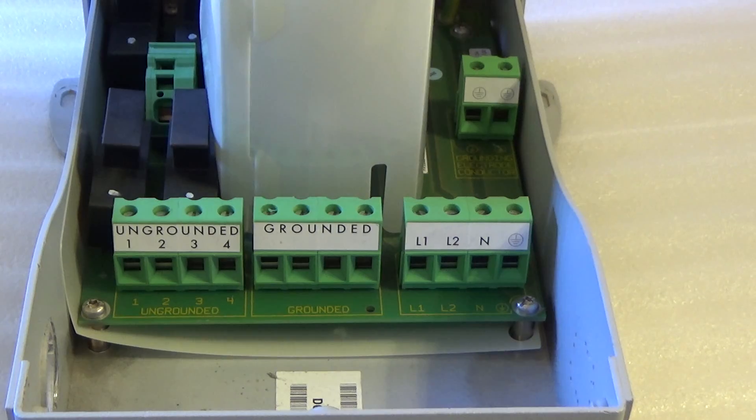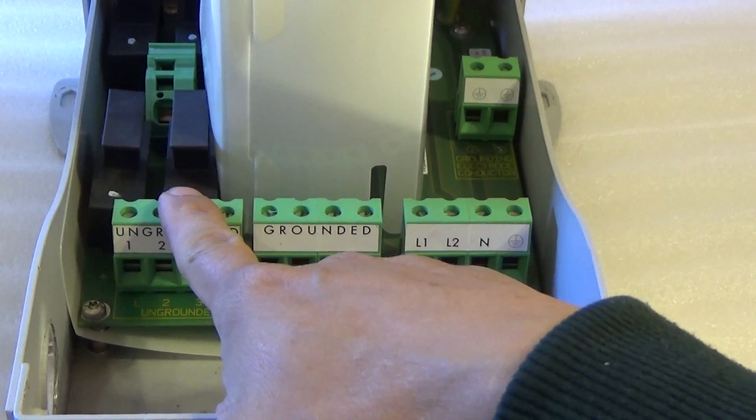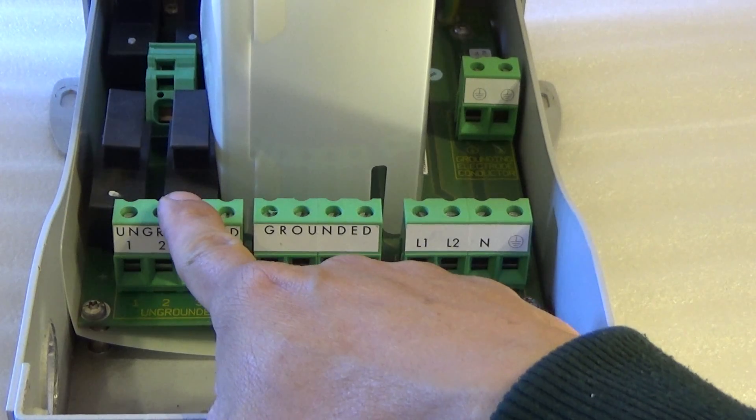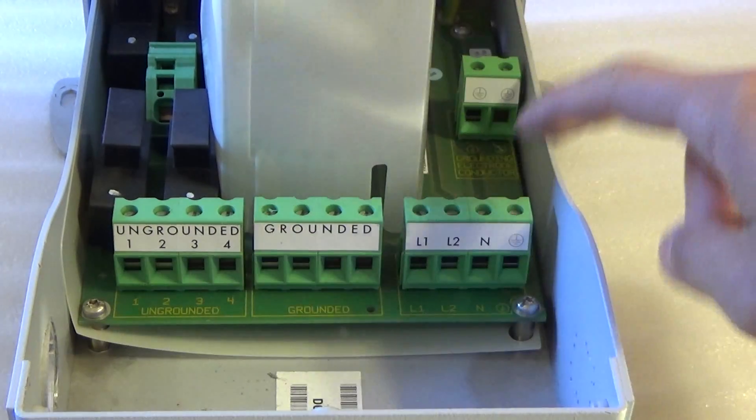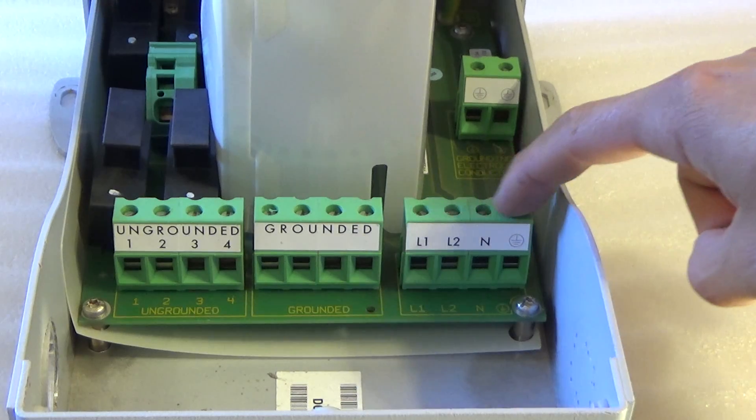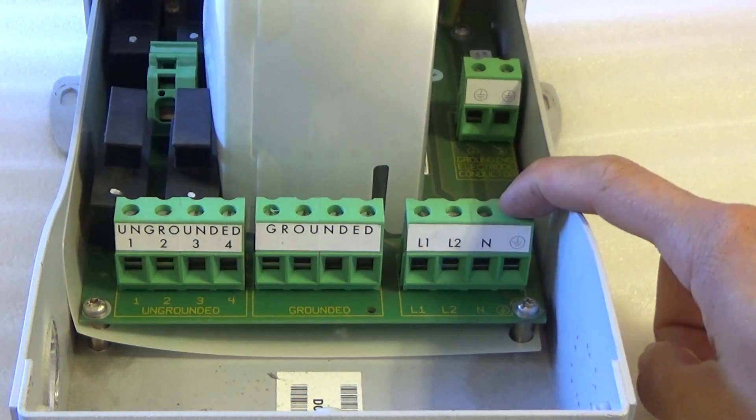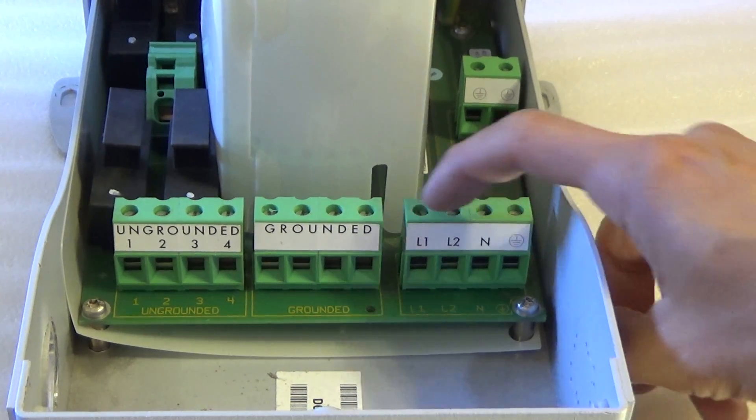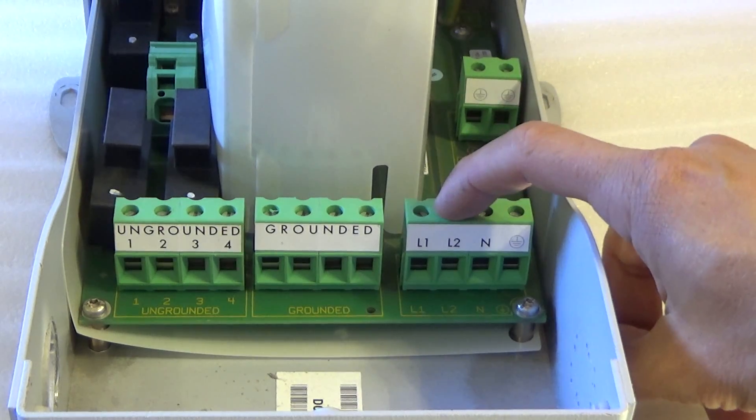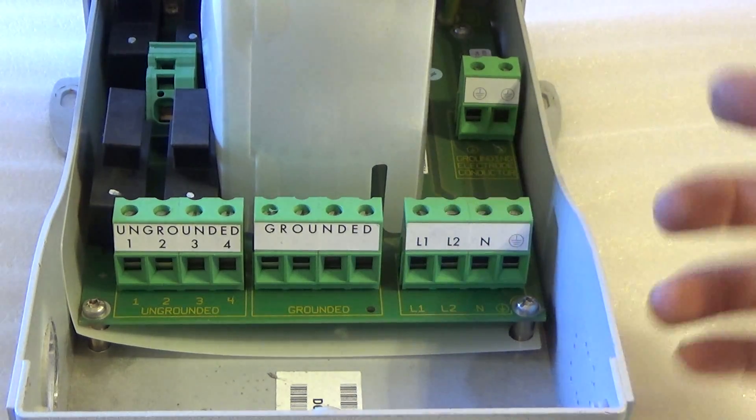Alright. So to install this disconnect, all you gotta do is just install positive coming from solar panel over here, negative over here. And then on these four connections here, we got AC. So just put in your AC connections. Line one hot, line two hot, neutral and ground. And that's pretty much it.